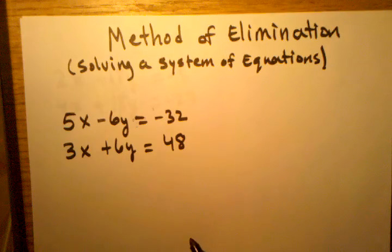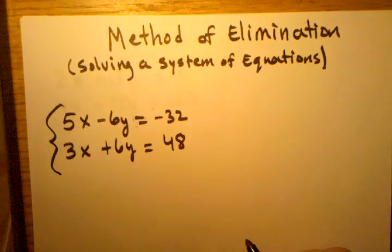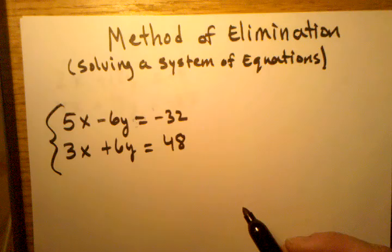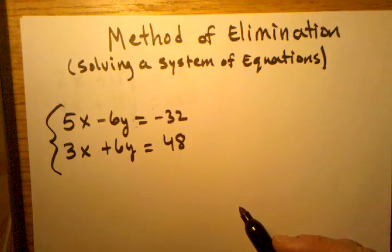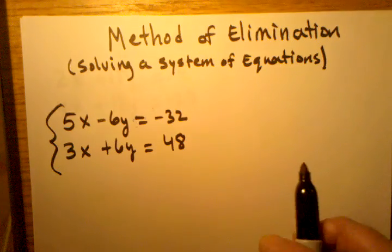So I will show you what that means. But again, here we have a system of equations, of linear equations, and we know that these are two lines, each one represents a line. And on the graph, these two lines are going to intersect at one point. I'm giving you a system that I know that intersects at one point to show you how it works.